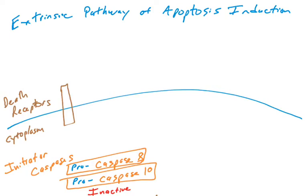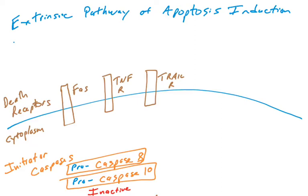There are a number of different death receptors in humans. Three examples are: a protein called FAS or the FAS receptor, a protein called the TNF receptor, and a protein called the TRAIL receptor. They are found on the surface of some human cells, can increase in levels if the cell believes it might need to be targeted for destruction, and they engage ligands outside the cell that will then signal into the cell to initiate our caspases.